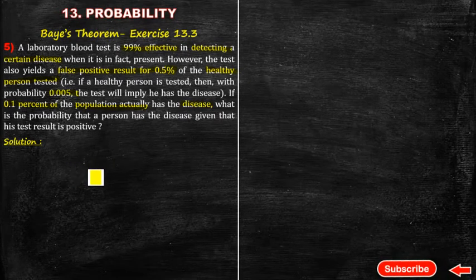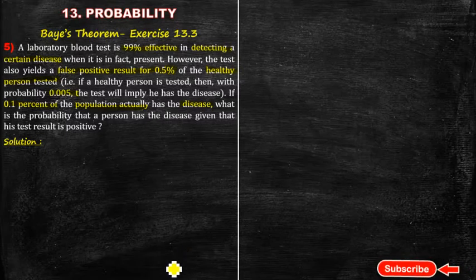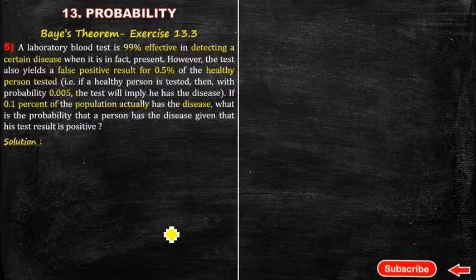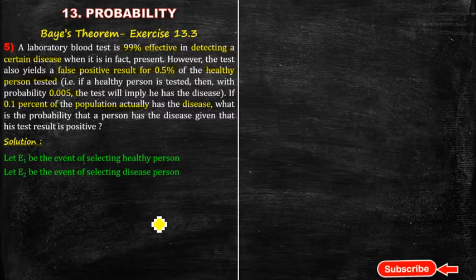What is the probability that the person has the disease given a positive result? Let us define the events. Let E1 be the event of selecting a healthy person. Let E2 be the event of selecting a diseased person.